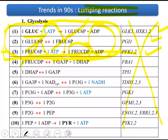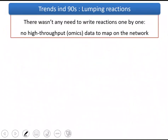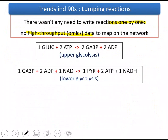Because we didn't have any transcriptome or related data in those years, there wasn't any point in adding gene information to those metabolic network models. So rather than writing reactions one by one, since there wasn't any high-throughput omics data to map on those metabolic networks, there was this lumping. As you see, you can show the upper glycolysis — the six-carbon stage — as a single reaction. Similarly, from glyceraldehyde-3-phosphate to pyruvate, you can again lump and combine the reactions as a single reaction.